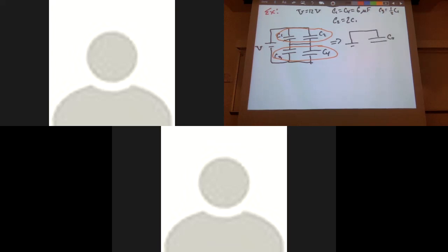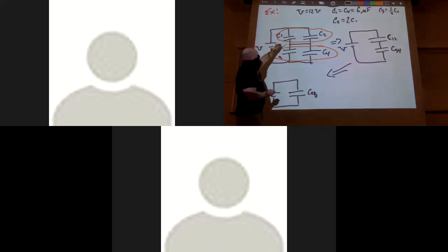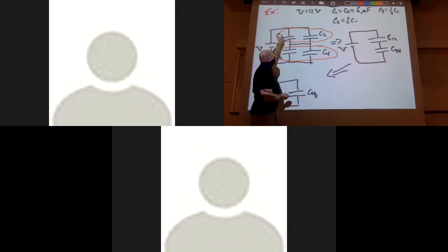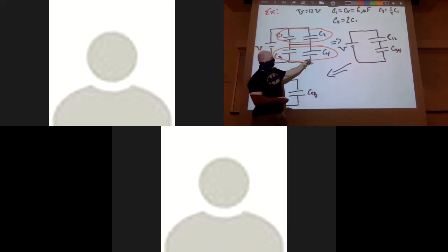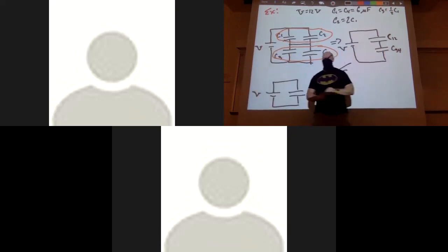Once combined, C12 and C34 are then in series with each other. So I redraw the circuit as my battery connected to C12 in series with C34, and then combine those down to get the final equivalent capacitor CEQ. Because of the node structure, C1 and C2 share nodes so they must be in parallel, and similarly for C3 and C4. Once combined, those two equivalent capacitors are in series.